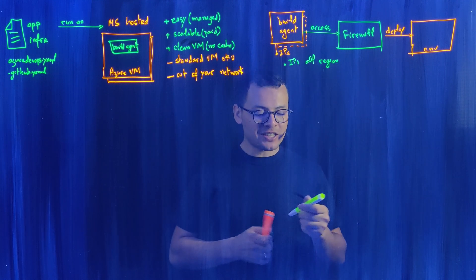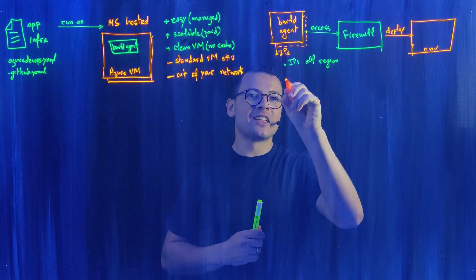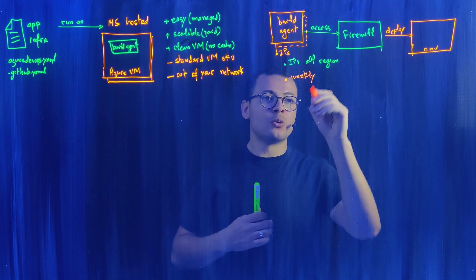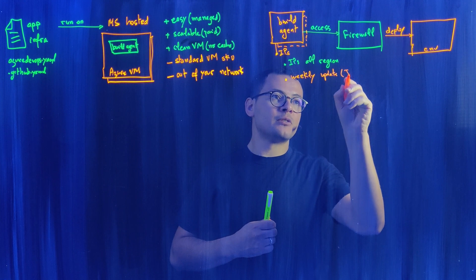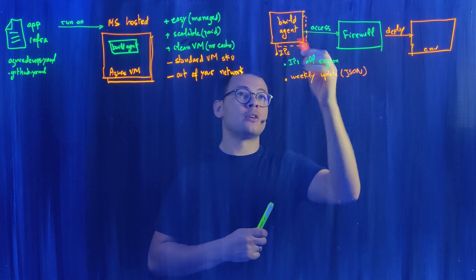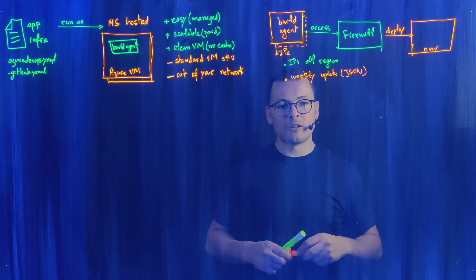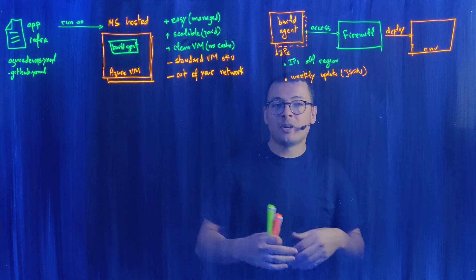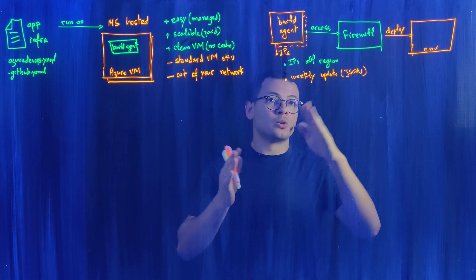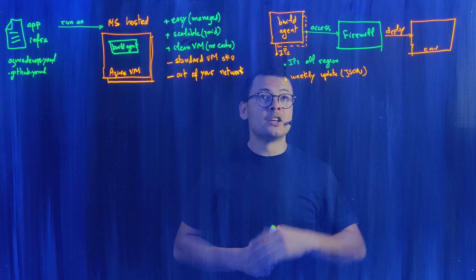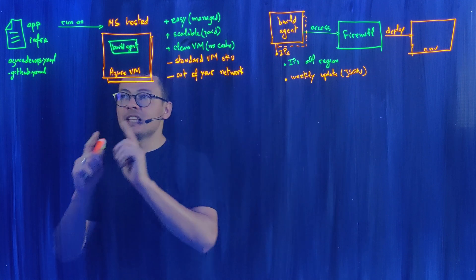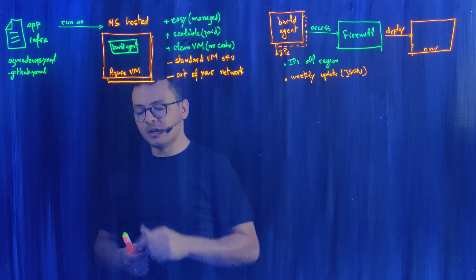Adding to this challenge, those IP addresses change every week. Microsoft publishes a weekly JSON file containing the new IP addresses you need to open in your firewall for the build agent to access your environment. For some organizations this is acceptable, but for many it's a security issue — they don't want to open up for all those IPs. That's where the second option, the self-hosted agent, comes in.